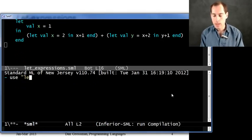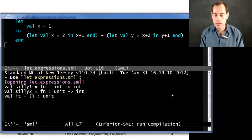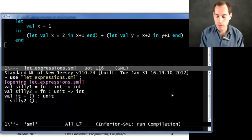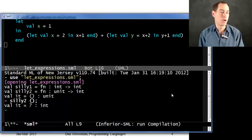So, we can try this out real quickly. Let's try let expressions dot sml. And if I want to run call silly two, just pass it zero arguments. Pass it a unit value there. And I get seven, which is what I expected. Alright? So, that's let expressions.